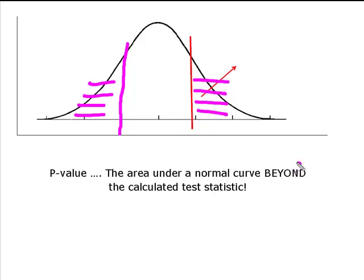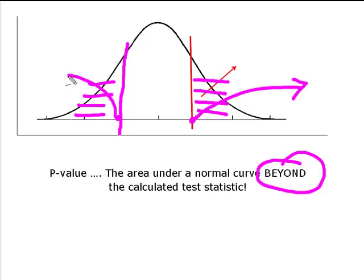It's simply the area beyond the calculated test statistic and what it truly represents is the probability of obtaining a test statistic that is at least as extreme as the calculated value.